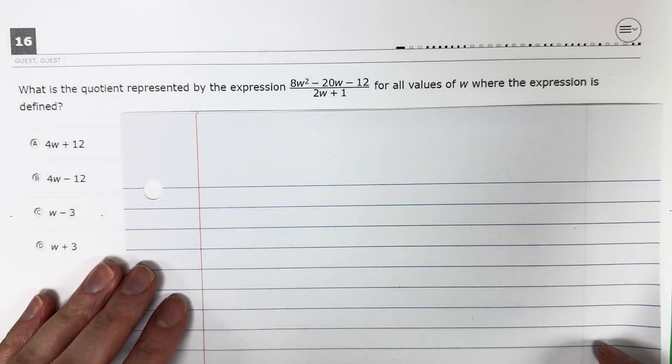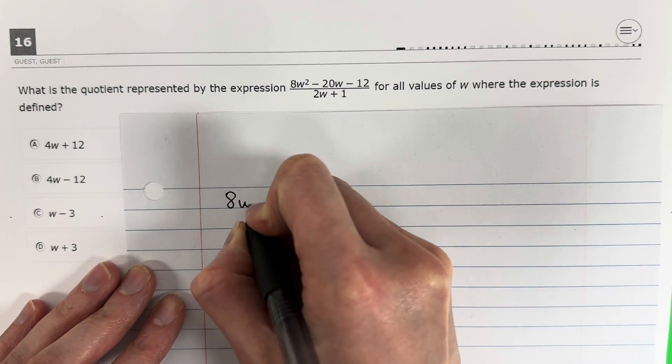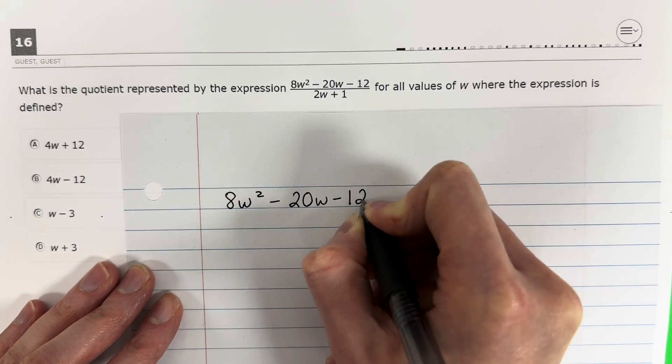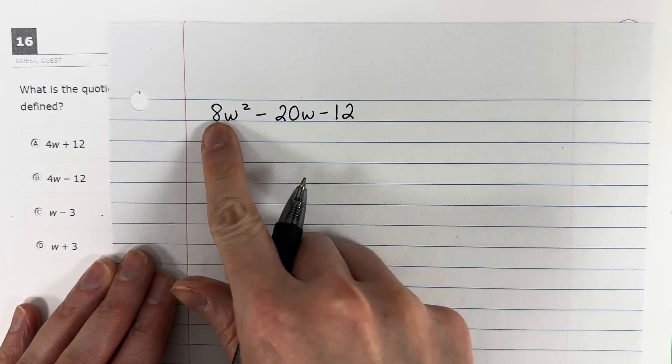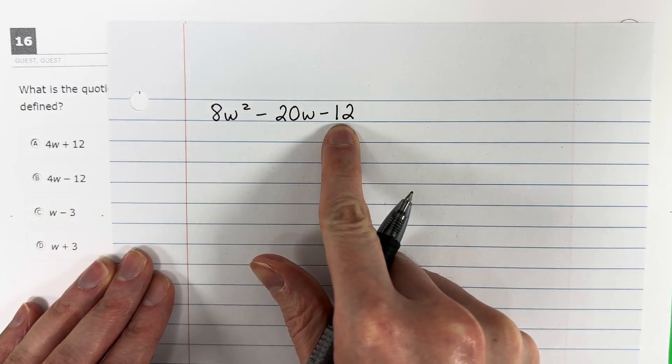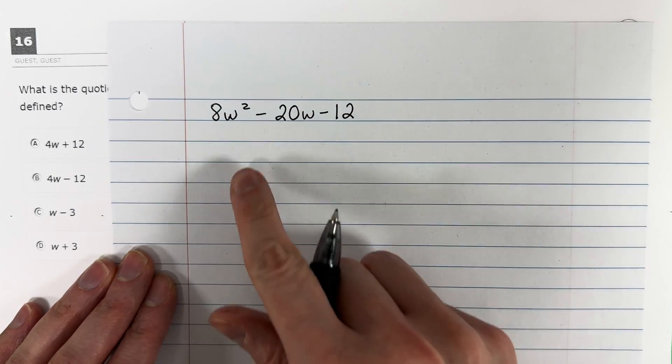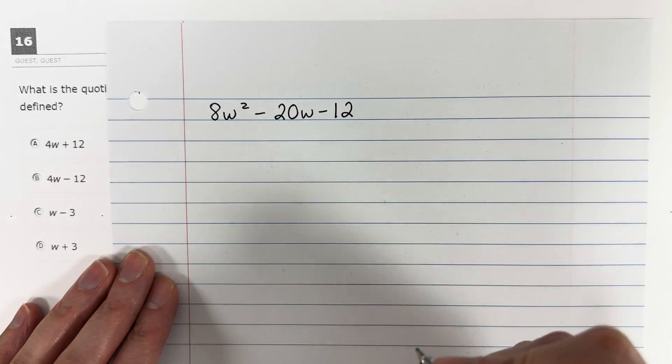So I'm going to go ahead and copy that here on this paper, just the top part. 8w squared minus 20w minus 12. Now, before I factor anything, what I noticed is that all of these numbers are even, and I can divide them all by 4.